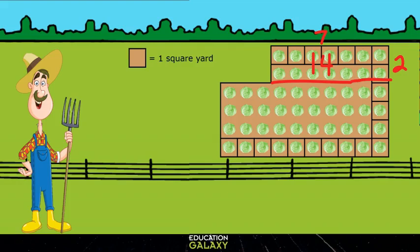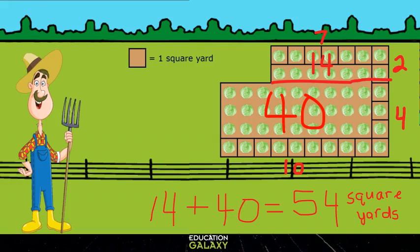Now for the bigger one, we have 10 times 4, which is 40. So to find our total, if we add 14 plus 40, we get 54. So our answer is 54 square yards.